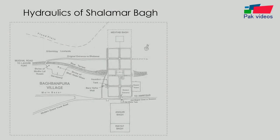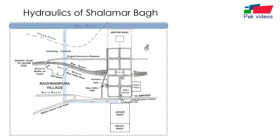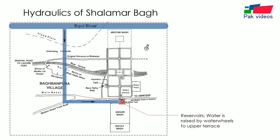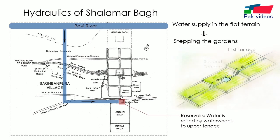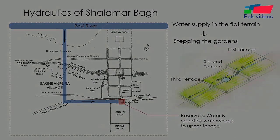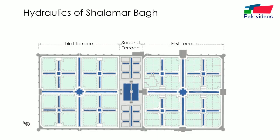The hydraulics of Shalamar Bagh: water was brought by canals to the south end of the complex and raised by water wheels to reservoirs constructed above the gardens. The complex water storage system of aqueducts was devised by Mughal architects to provide water supply on a large scale in the flat terrain of Punjab. Stepping the gardens in three great terraces allowed just the right amount of water to flow through a central canal. Water flows through 22 pipes, of which several feed the treesides and waterfalls, while others supply the fountains of the lower terraces.